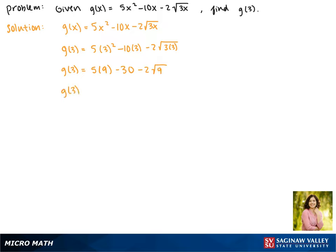Now 5 times 9 is 45, so we have 45 minus 30. The square root of 9 is 3, and 3 times 2 is 6.